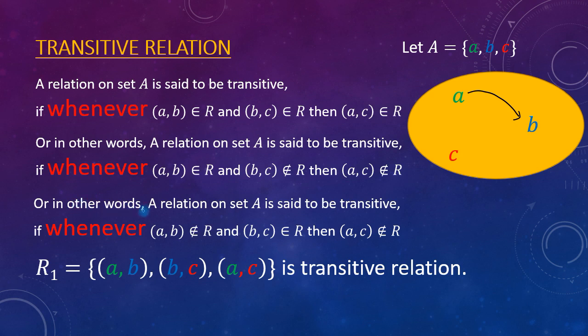In other words, a relation on set A is said to be transitive if whenever (a,b) ∉ R and (b,c) ∈ R, then (a,c) ∉ R. That means another relation we have defined here: only b is related to c, and in the previous definition, a is only related to b. What does it mean?